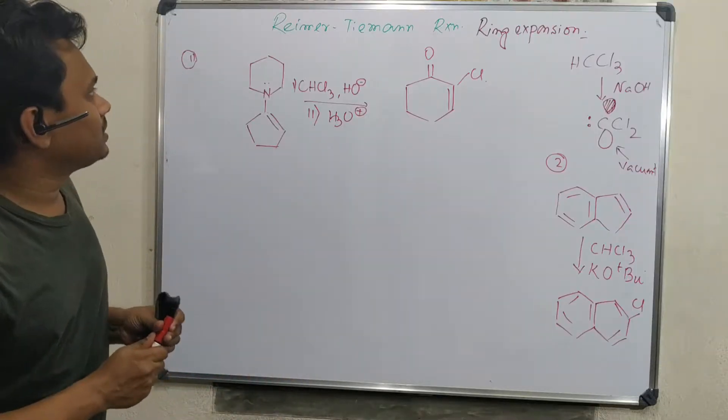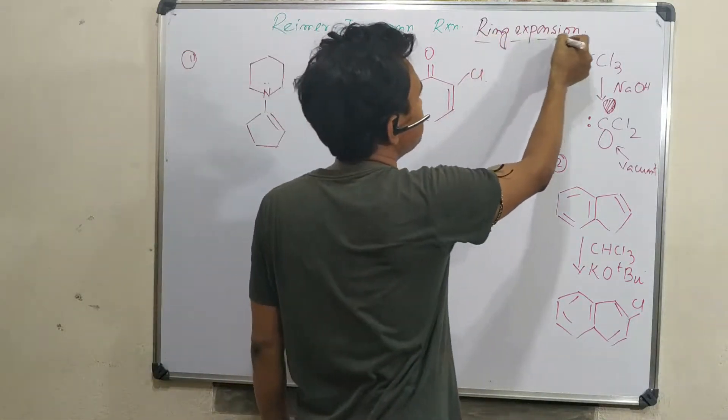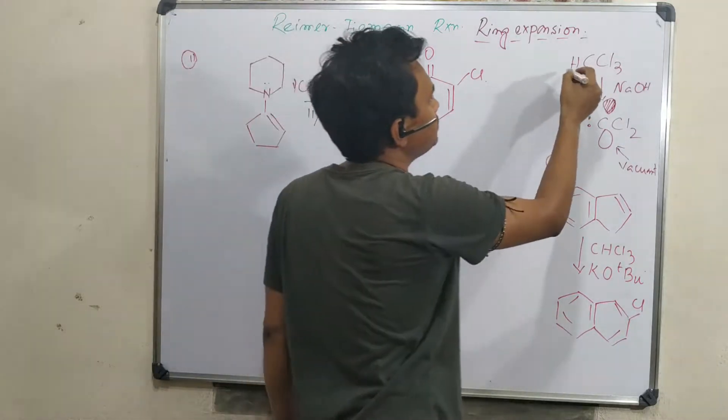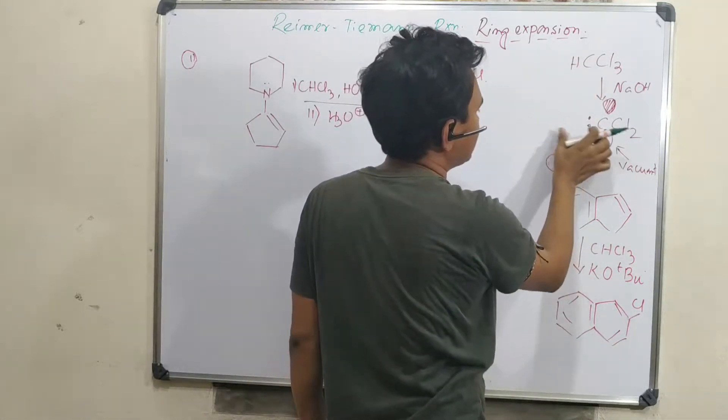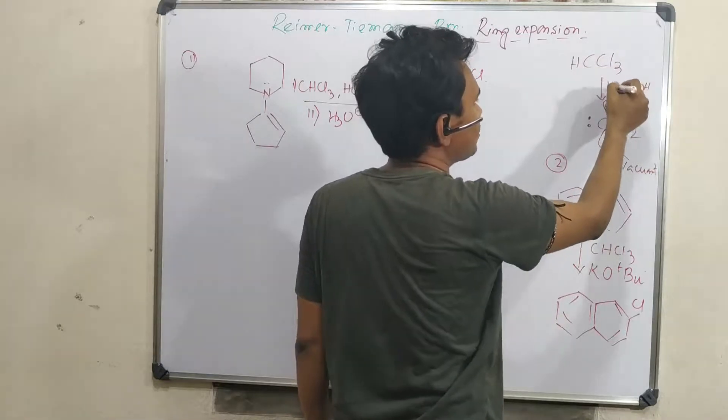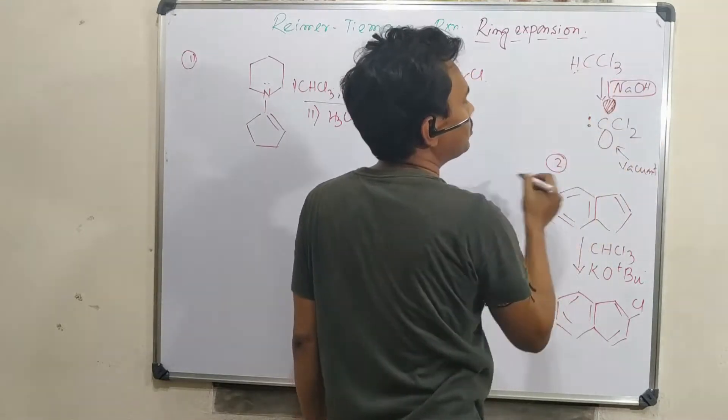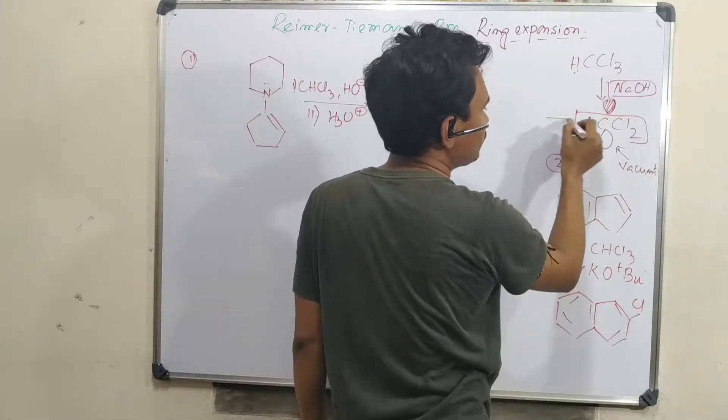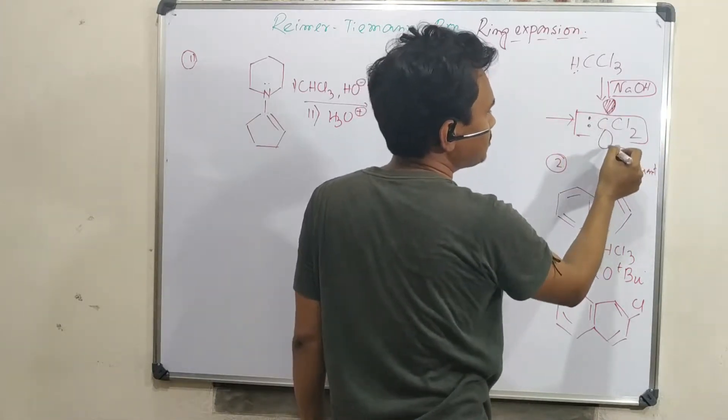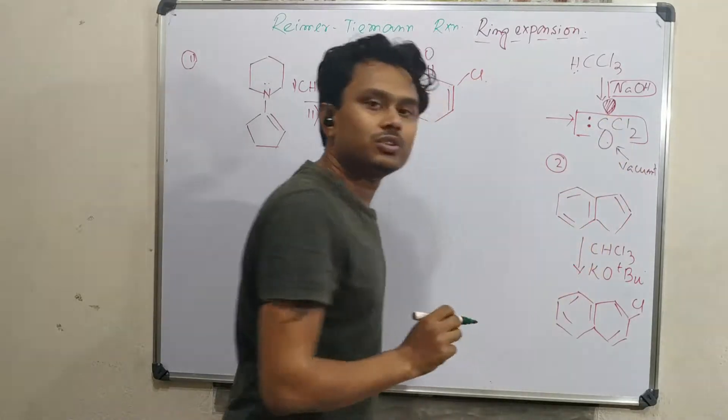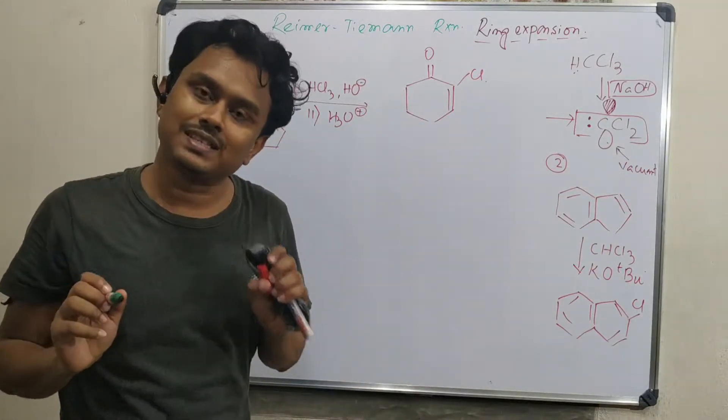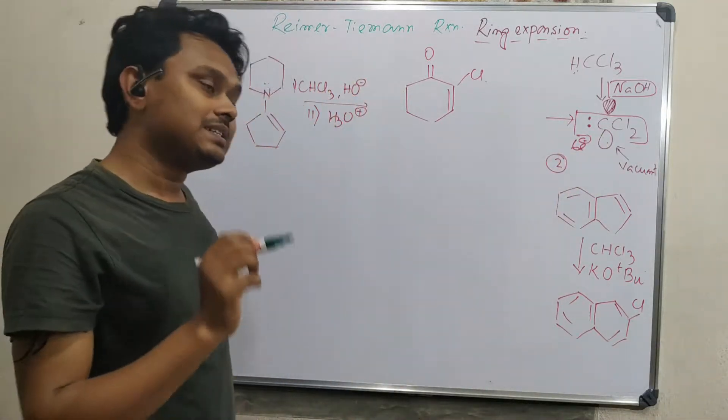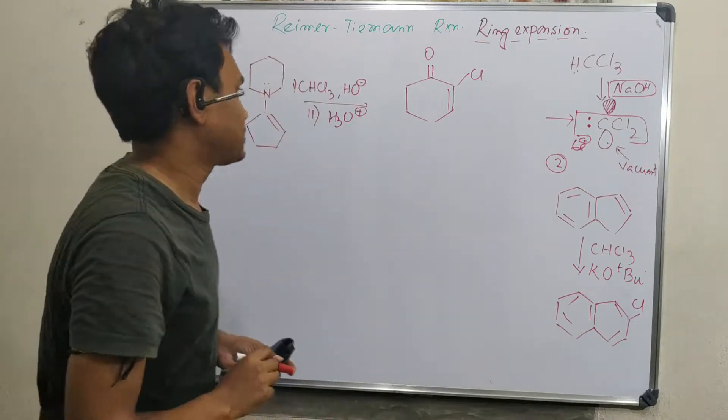This ring expansion is based on one fact. Before that, let me give you information that in presence of alkali, chloroform produces dichlorocarbene. This is an electrophilic center with a vacant p orbital, so it can accept electron density. It's a 6-electron species. It adds to the double bond and that is the basis for this ring expansion.